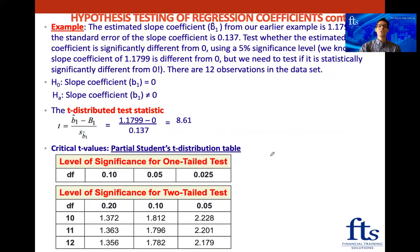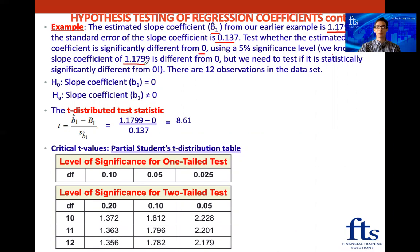Let's try an example. The estimated slope coefficient b1-hat from our previous class is 1.1799, and the standard error of the slope coefficient is 0.137. We want to test whether this estimated slope coefficient is significantly different from zero — that's our hypothesized value — using a 5% significance level. Now, 1.1799 is obviously different from zero, but we need to test if it is statistically significantly different from zero.